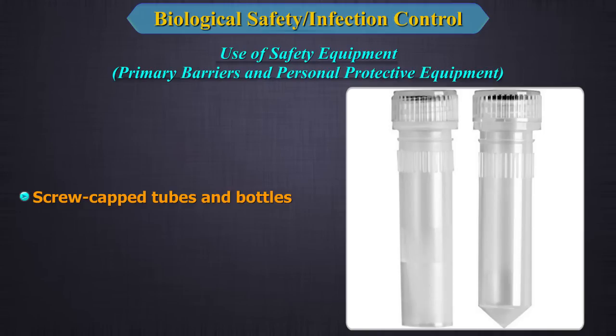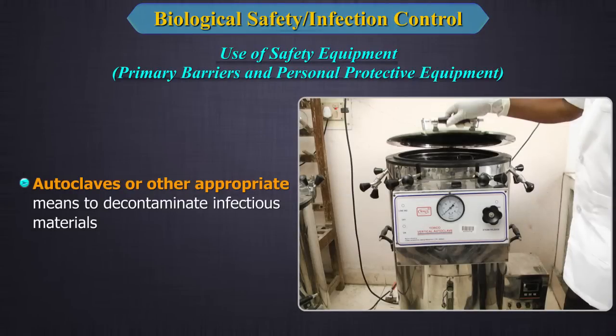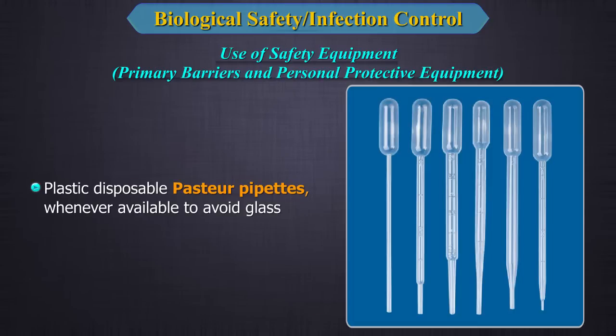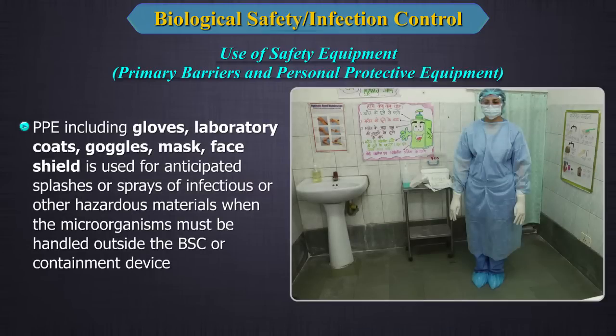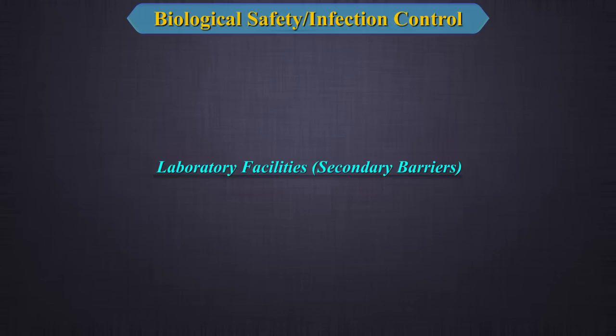4. Autoclaves or other appropriate means to decontaminate infectious materials. 5. Plastic disposable Pasteur pipettes whenever available to avoid glass. 6. PPE — personal protective equipment — including gloves, laboratory coats, goggles, mask, and face shield. These are used for anticipated splashes or sprays of infectious or hazardous materials when microorganisms must be handled outside the biosafety cabinet or containment device.